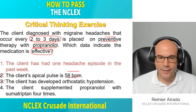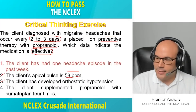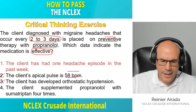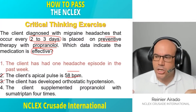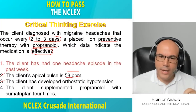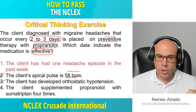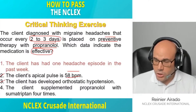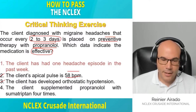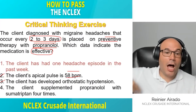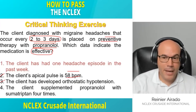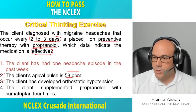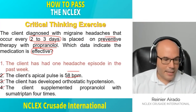Answer number four says the client supplemented propranolol with sumatriptan. When does a patient need to supplement one prescribed medication with another? When the medication is not being effective. Sumatriptan is used to treat symptoms of migraine headaches, but if it had to be given on top of propranolol, it means the propranolol did not work. If propranolol had been effective, no additional medication would be needed. So answer four is eliminated — the correct answer is number one.